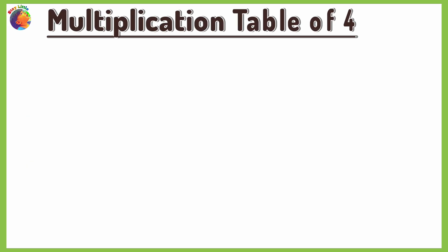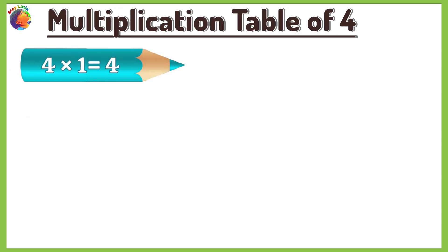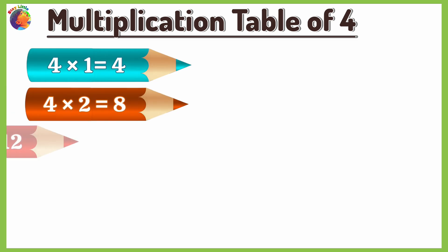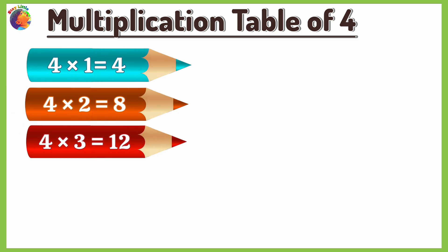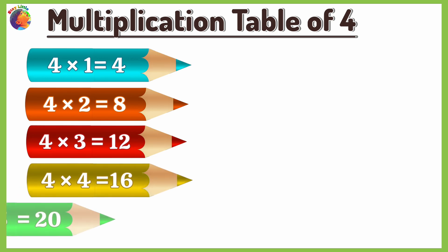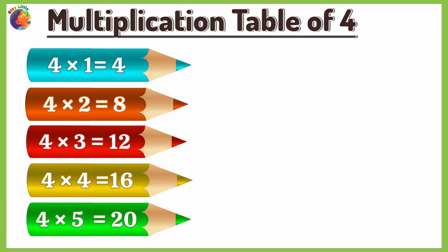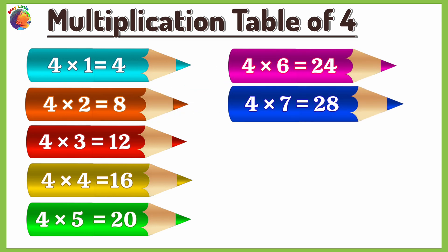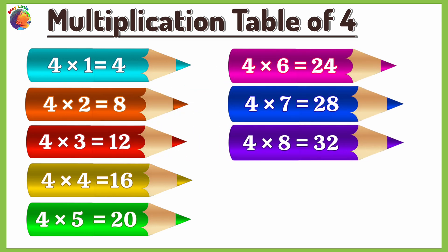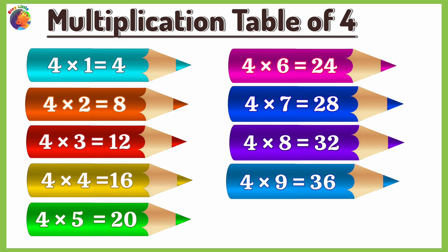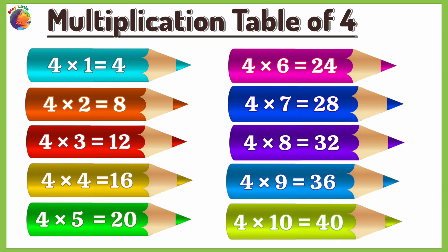Multiplication Table of 4. 4 times 1 is 4, 4 times 2 is 8, 4 times 3 is 12, 4 times 4 is 16, 4 times 5 is 20, 4 times 6 is 24, 4 times 7 is 28, 4 times 8 is 32, 4 times 9 is 36, 4 times 10 is 40.